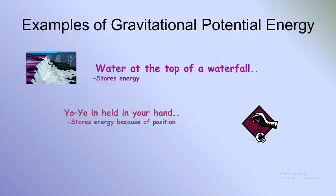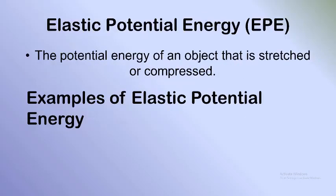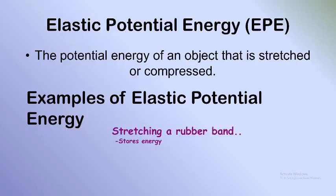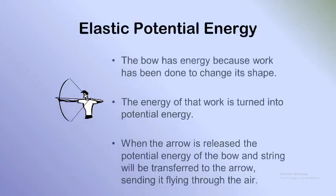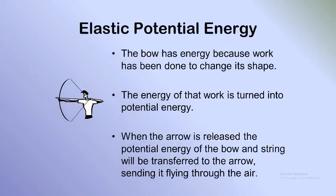Now, what about the other form of potential energy — elastic potential energy? This is the potential energy of an object that is stretched or compressed. When an object is stretched or compressed, it stores elastic potential energy. For example, drawing a bow: work has been done to change its shape, and that energy is turned into potential energy. When the arrow is released, the potential energy of the bow and string is transferred to the arrow, sending it flying through the air.